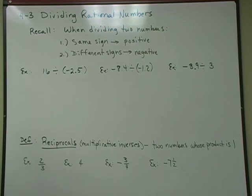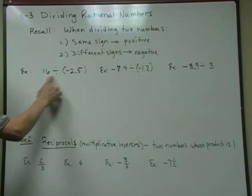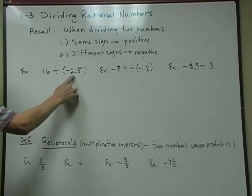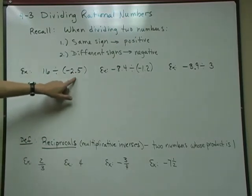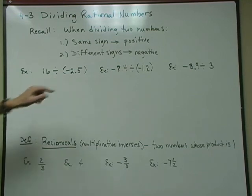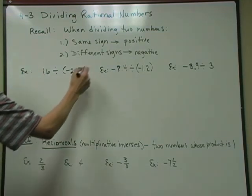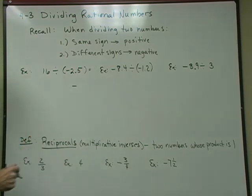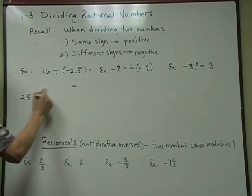We'll start with the decimals — they're the easier one. Remember that the first number in the division problem is called the dividend. The second number is called the divisor, which you're dividing by. Now, you cannot divide by decimals — that's what makes this tricky. I have a positive divided by a negative, so I know my answer's going to be negative. I'm going to put the 2.5, that's the divisor, on the outside, and put the 16 on the inside.